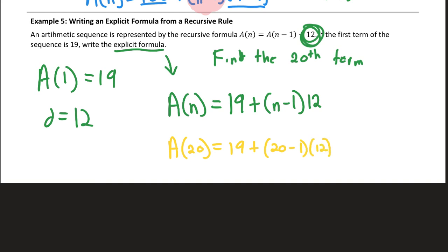So to simplify that, the 20th term is 19 plus 19 times 12, which is 228. That added together is 247. So the 20th term would be 247. That's what the explicit rule allows us to do, is to find terms out beyond the first few terms. So it's a formula.